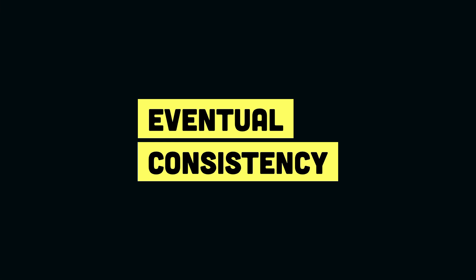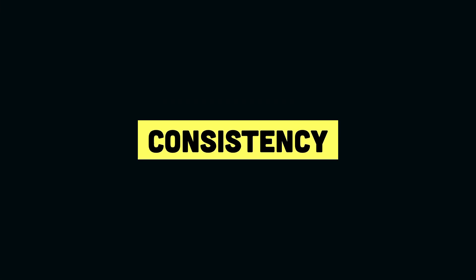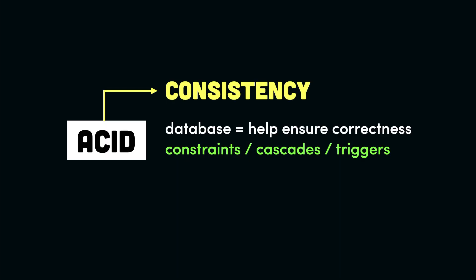Today we will be talking about eventual consistency. We've talked about consistency in two different videos on this channel. The first was when we talked about ACID compliance. In ACID, consistency means that the database should help ensure the correct state of the data — if we have any constraints, triggers, or cascading rules on our tables, the database should make sure it follows those rules when inserting new data. We will not be talking about ACID consistency from that angle in this video, but there is a separate video on this channel linked in the description below.